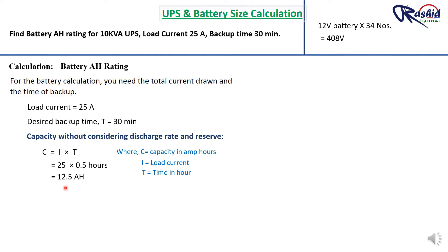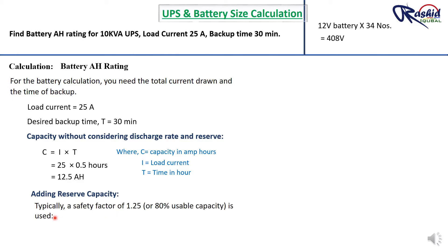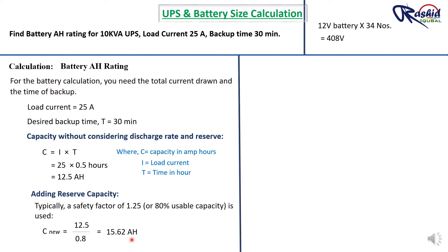This calculation does not yet consider reserve capacity or discharge rate. Adding reserve capacity: we typically consider 80% usable capacity. So C_new = 12.5 AH ÷ 0.8 = 15.62 AH. Reserve capacity refers to how long the UPS can continue to power connected devices during an outage before the battery is depleted.